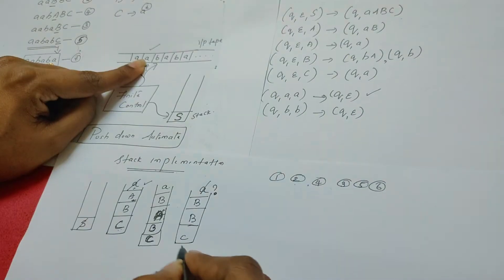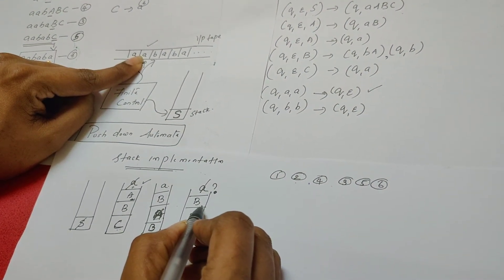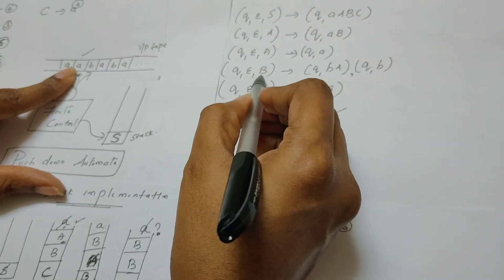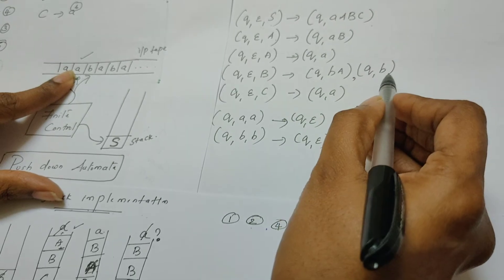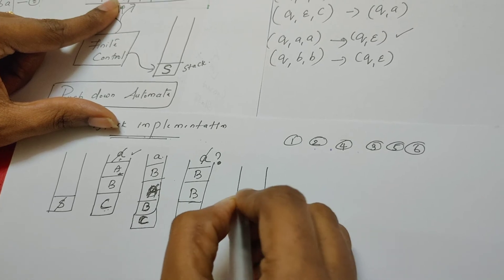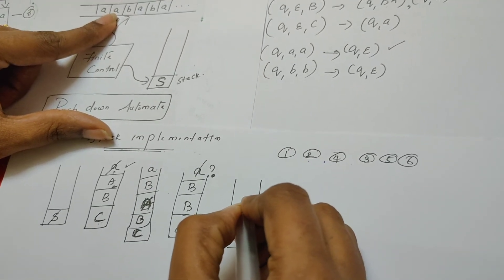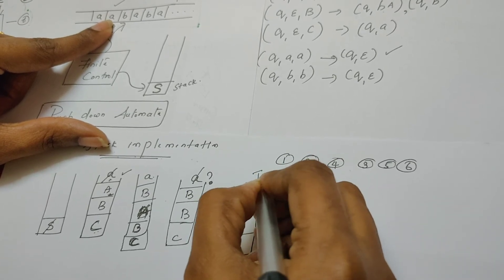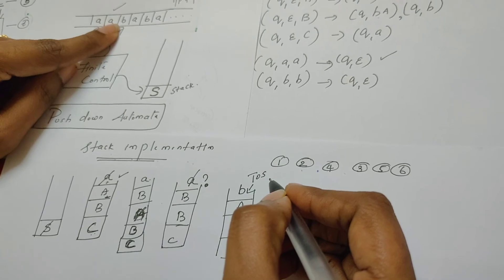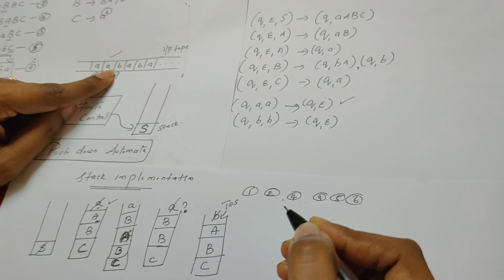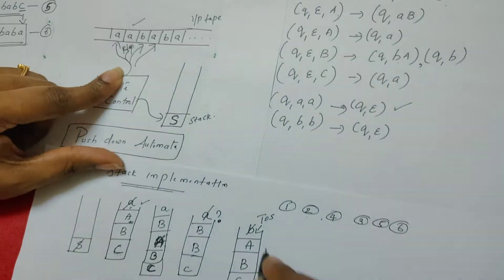Once again, we check what is at the top of the stack — there is a variable B. If there is a variable, we select the transition rule for variable B. B can be replaced by either B, A or B — we chose B, A in the derivation. So now we push B, A onto the stack. The stack has C, B, and in place of B we push variable A, then terminal b. Since both the terminal b at the top of the stack and what the read-write head reads match, we pop and advance.